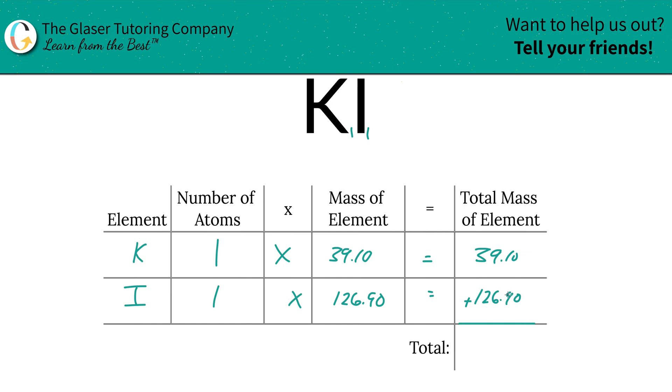And then to find the total mass of the entire compound, we simply add up this column. Easy peasy, right? So this is 166 grams per mole, because we're finding molar mass.